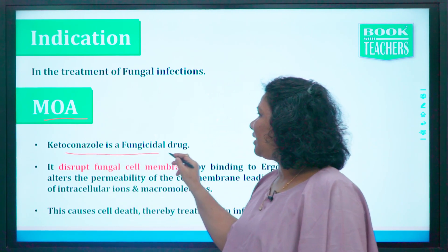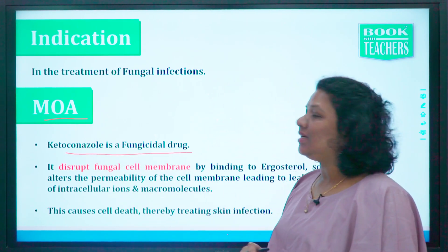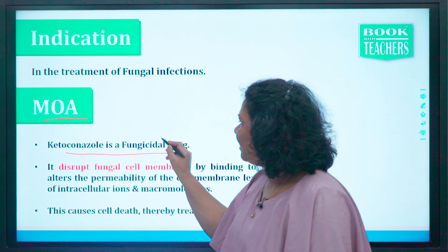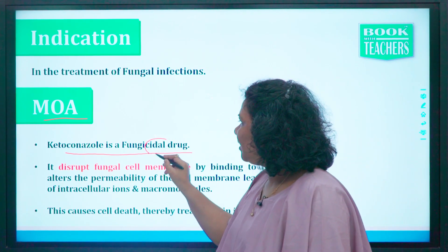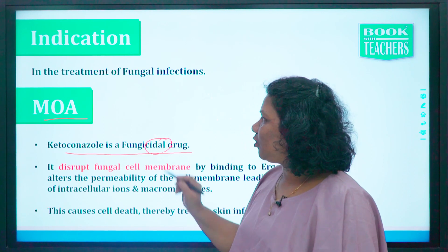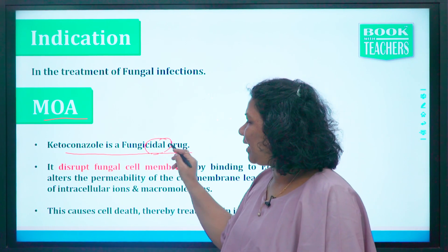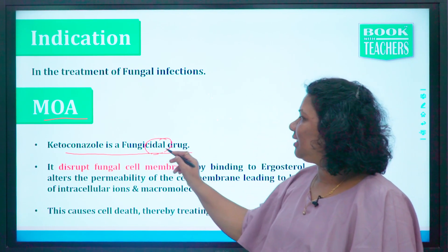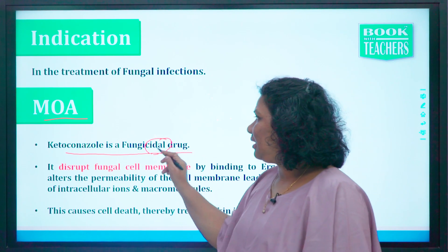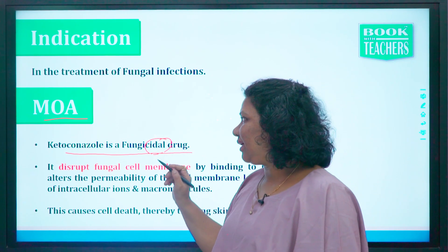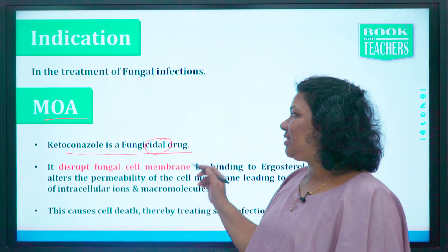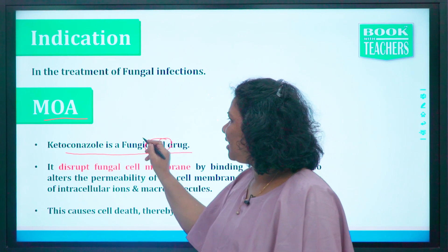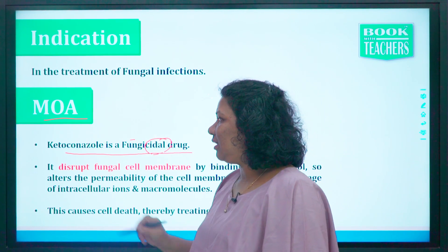Ketoconazole is a fungicidal drug. When we talk about 'cidal,' even in antibiotics, cidal means it kills — kills the fungi. So ketoconazole kills the fungi, and that is why it is known as a fungicidal drug.